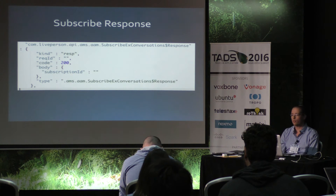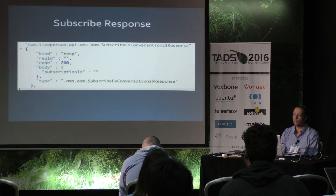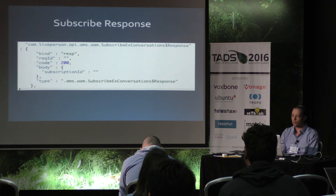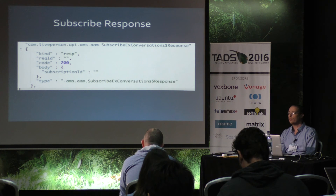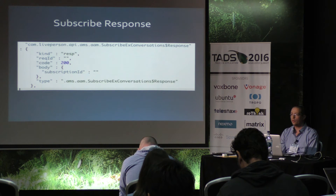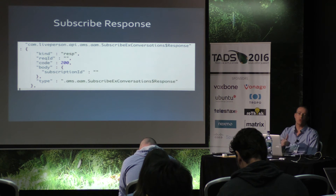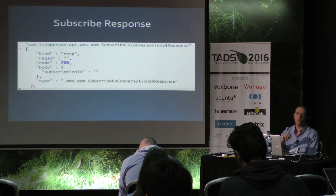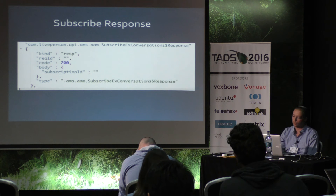This is a sample subscribe response. You see the kind is 'response'. The request ID is supposed to be the same ID that you sent in your request. And in this case, there is something interesting: we have the body 'subscribe ID'. Subscribe ID is very important in cases when you want to get a continuous query for something. You need to track the subscribe IDs because you can receive simultaneously multiple message notifications, so you need to know which notification is relevant for which user. The client actually needs to keep tracking the subscription IDs.